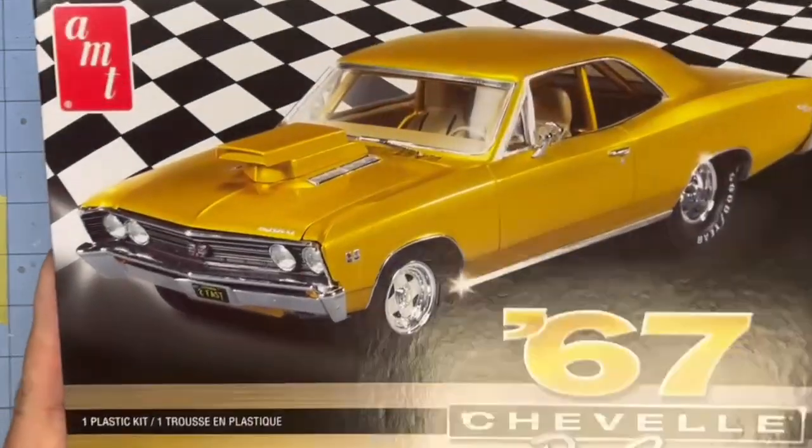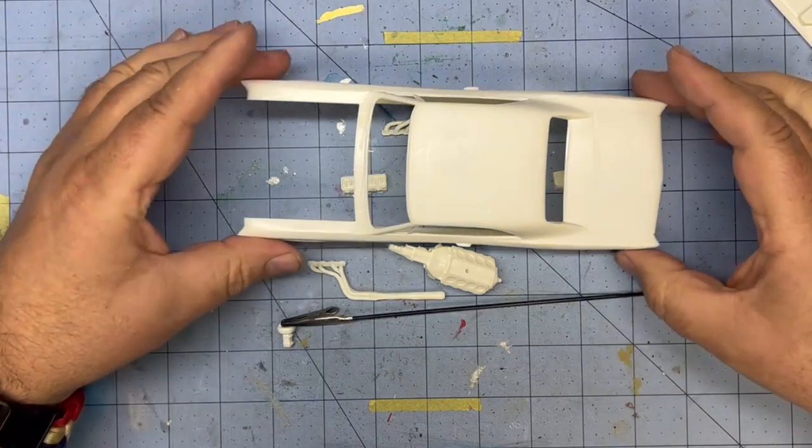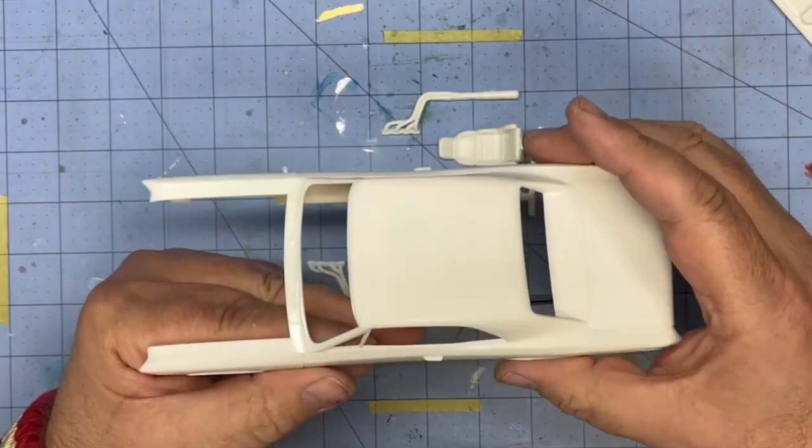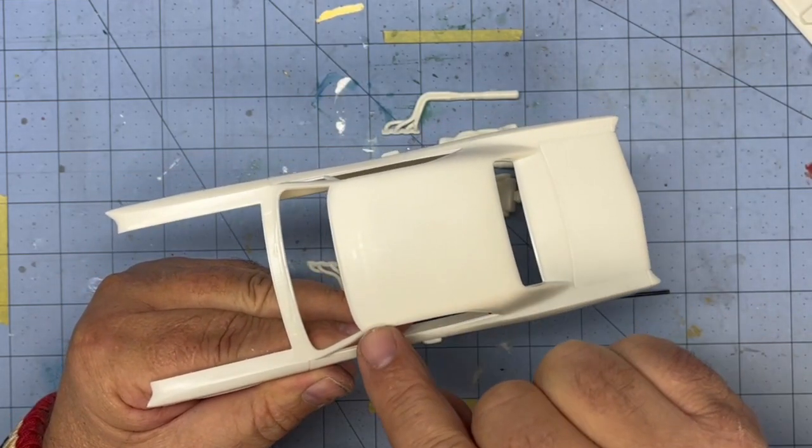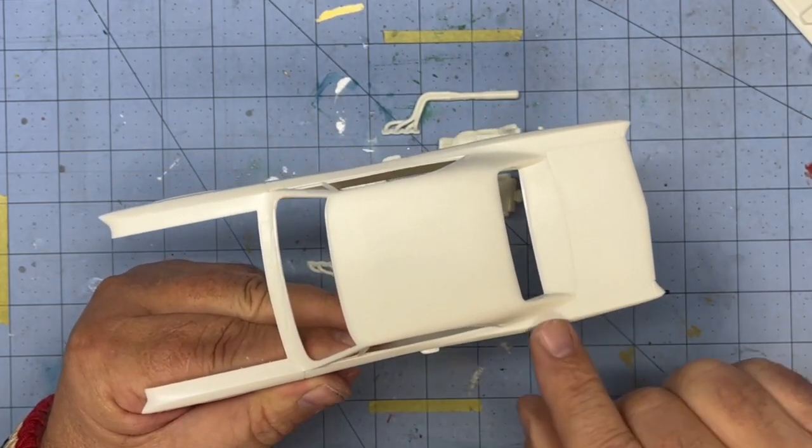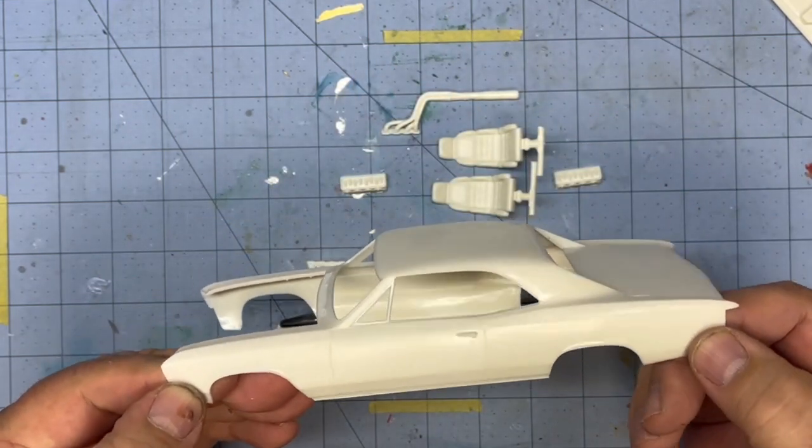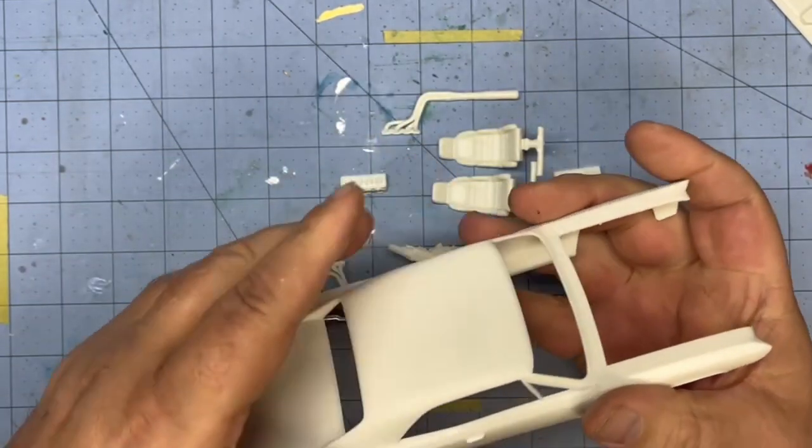So this is what we got done so far tonight. I got the mold lines all taken care of on the body, quick, fast, and in a hurry. They came up and around over here and then back down. Got them all sanded out, sanded the body down, trying to keep away from the emblems because I want to detail them out. Very quick, very easy.